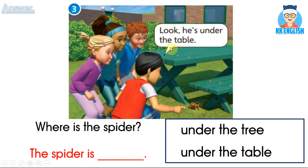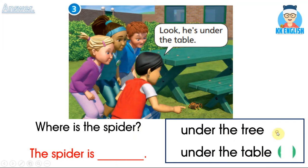Picture number three: Look at the spiders. Where are the spiders? We will say: Look, he's under the table. Spider is under the table. 她在桌子底下。Where is the spider? The spider is under the table. Yes, under the table!